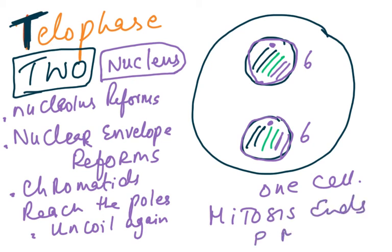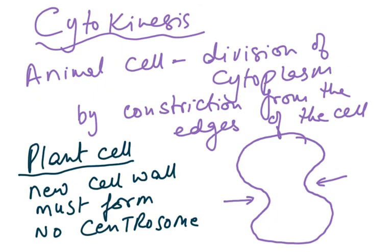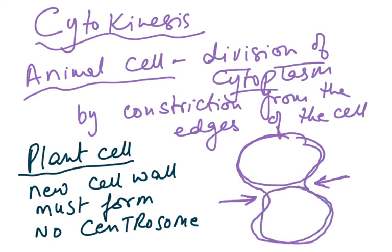After telophase, mitosis ends and cytokinesis begins — this is not part of mitosis. In animal cells, the cytoplasm divides by constriction from the edges, forming two separate cells. In plant cells, cytokinesis is different: a new cell wall has to be formed, and there are no centrosomes in plant cells.